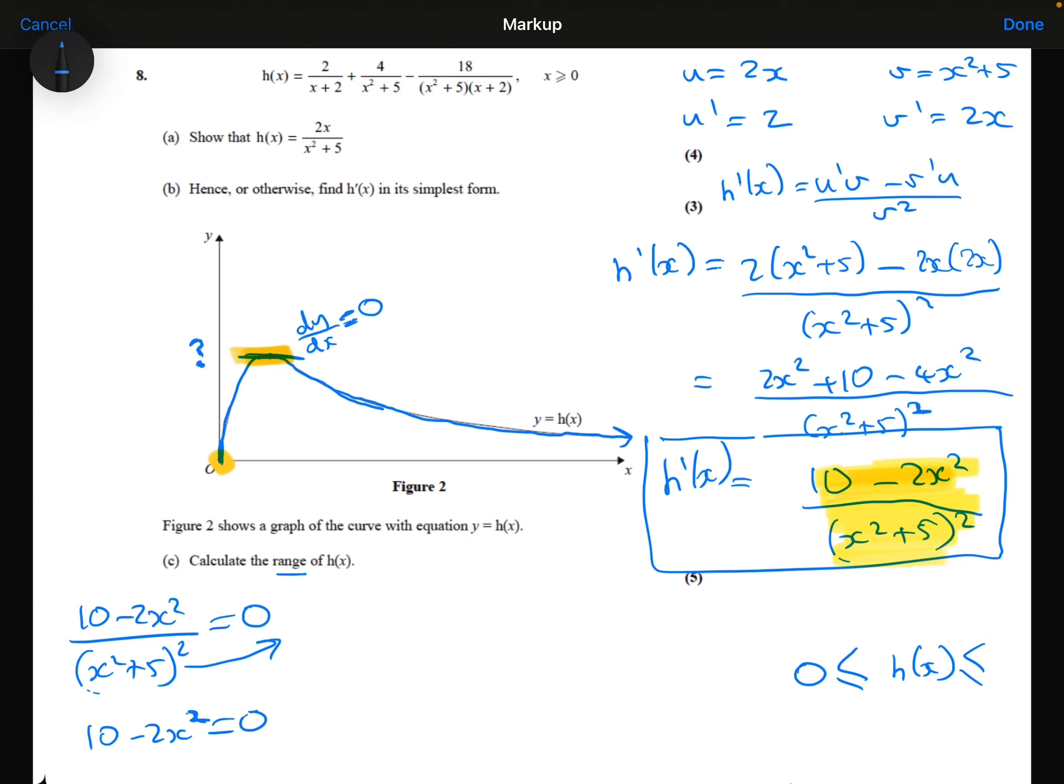Therefore, 2x squared is going to equal 10. So x squared is going to equal 5. So x would equal either plus or minus root 5. It can't be minus root 5 though, because x has to be a positive number. And also we can clearly see that x is going to be a positive number there.